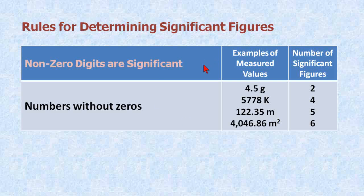The first rule is straightforward. Numbers without zeros are always significant. Here are some examples right here.